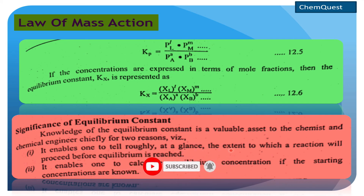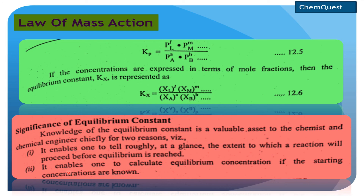یہ actually inherent nature ہوتی ہے کسی بھی reaction کی کہ whether it will proceed in a one-sided or two-sided manner — یعنی reaction reversible ہوگا یا نہیں۔ لیکن اگر reaction reversible بھی ہو تو chemist چاہے گا کہ reaction forward side پہ چلے۔ اگر equilibrium constant کی value کافی زیادہ ہو تو اس کا مطلب ہے کہ reaction forward side پہ چلے گا — یہ ہم آگے جا کے تفصیل سے پڑھیں گے۔